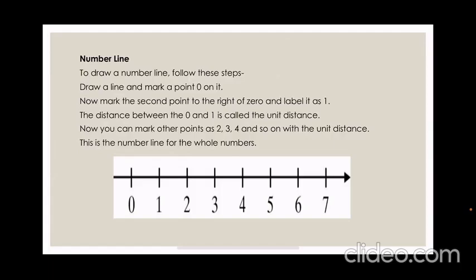Now mark the second point to the right of 0 and label it as 1. The distance between 0 and 1 is called the unit distance. That means the distance between every digit should be equal in the number line.